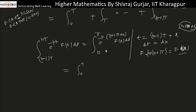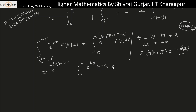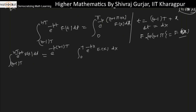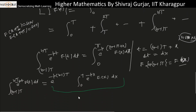The term e^(-p(n-1)T) is a constant with respect to x, so it can be taken out. This gives e^(-p(n-1)T) times the integral from 0 to T of e^(-px) f(x) dx. With variation of n from 1 to infinity, we can use this relation to sum all terms.